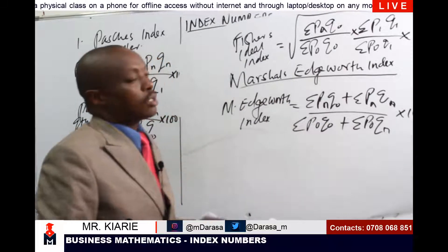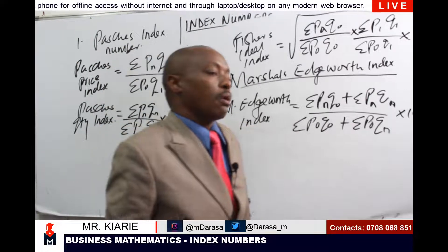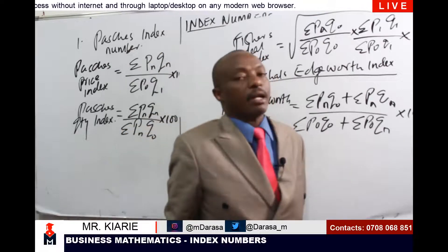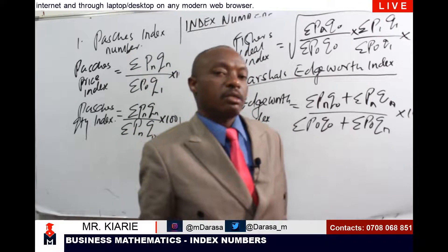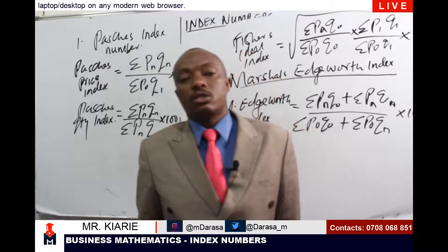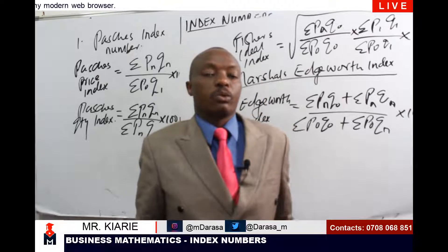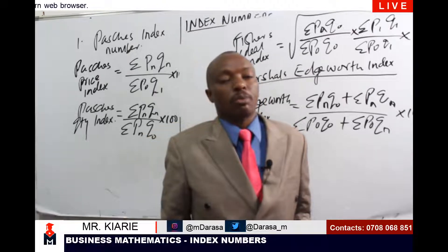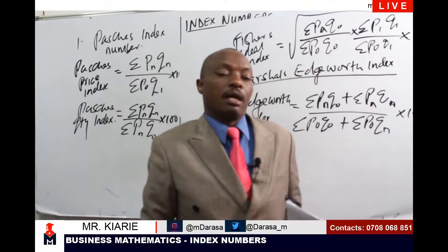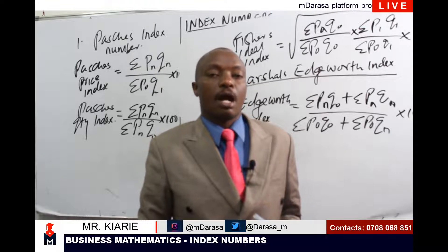When talking of N we are referring to the current prices or quantities; when talking of naught or zero we are referring to the base prices or the base quantities. That is the introduction to the topic of index numbers. In our next class we will move on to the computation part, dealing with these index numbers in a practical scenario. Have a nice time.